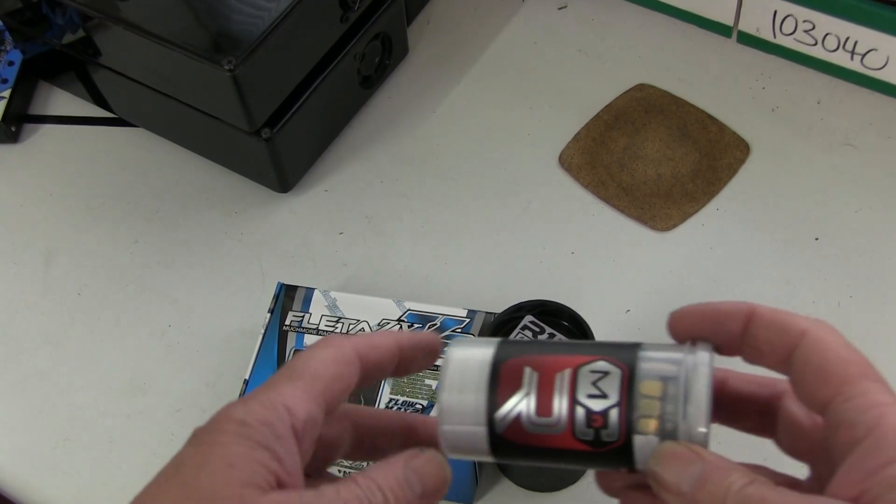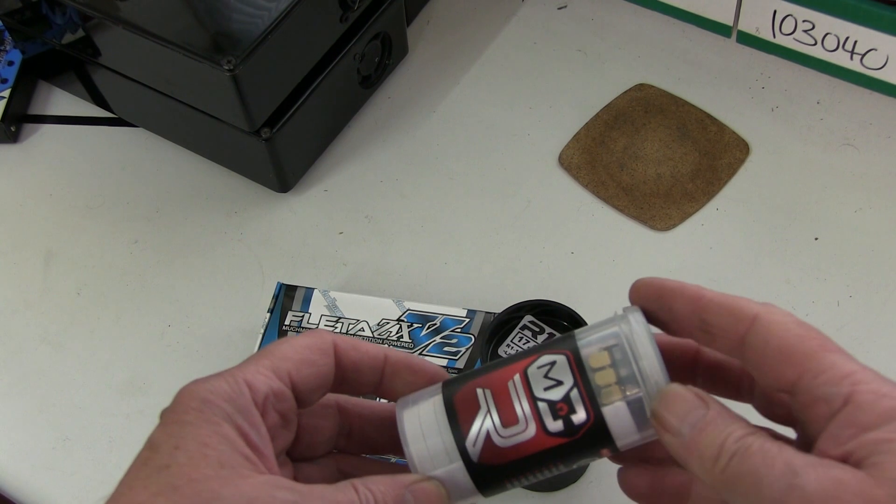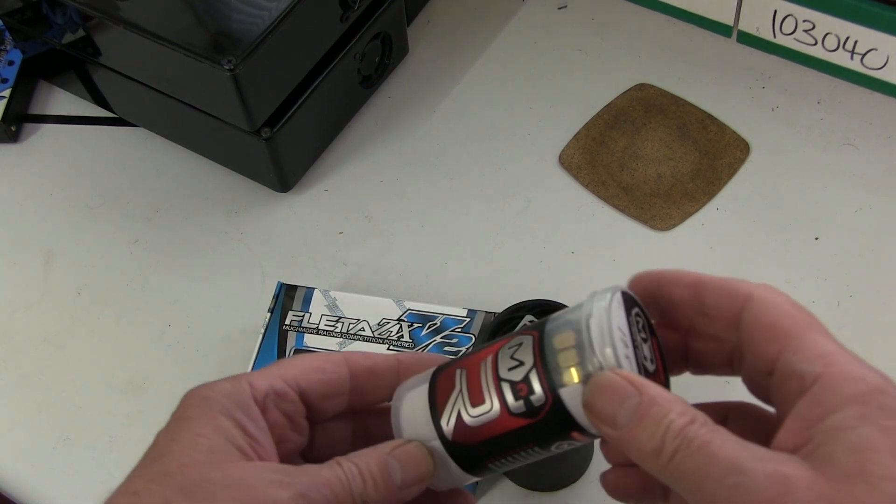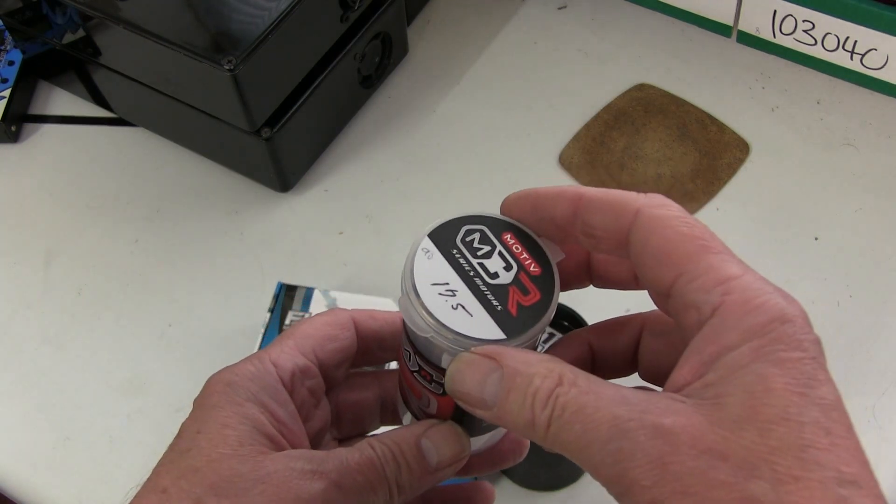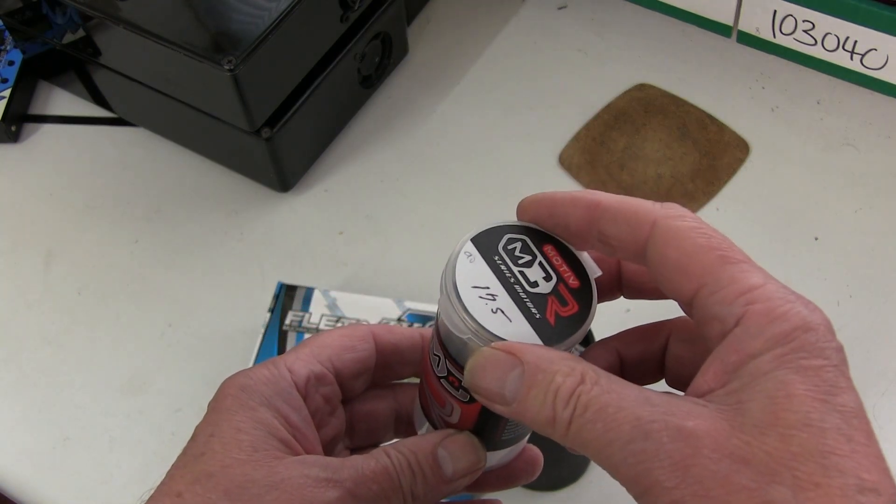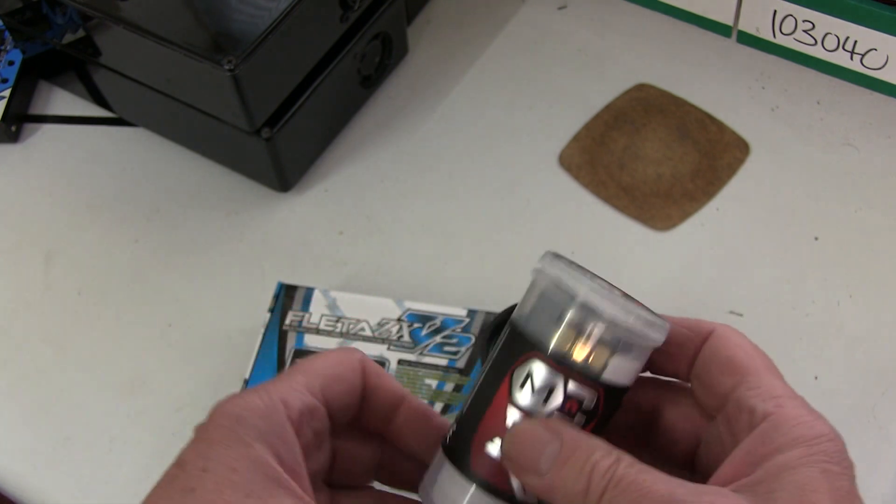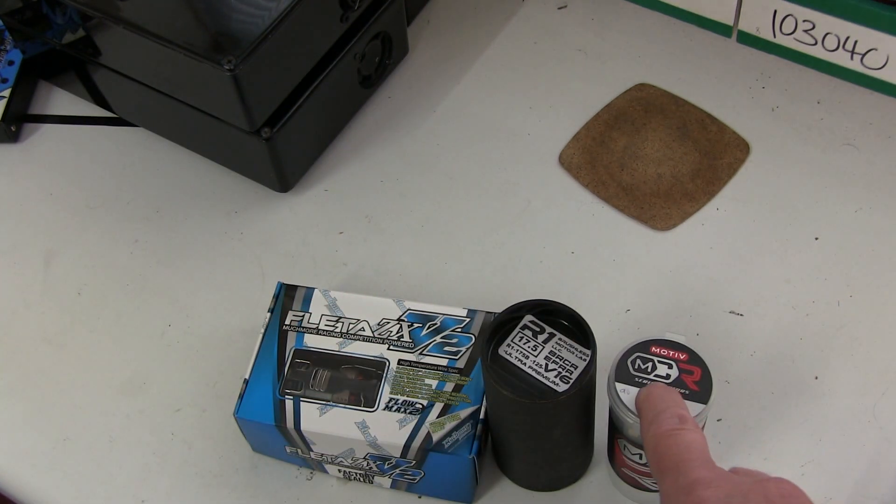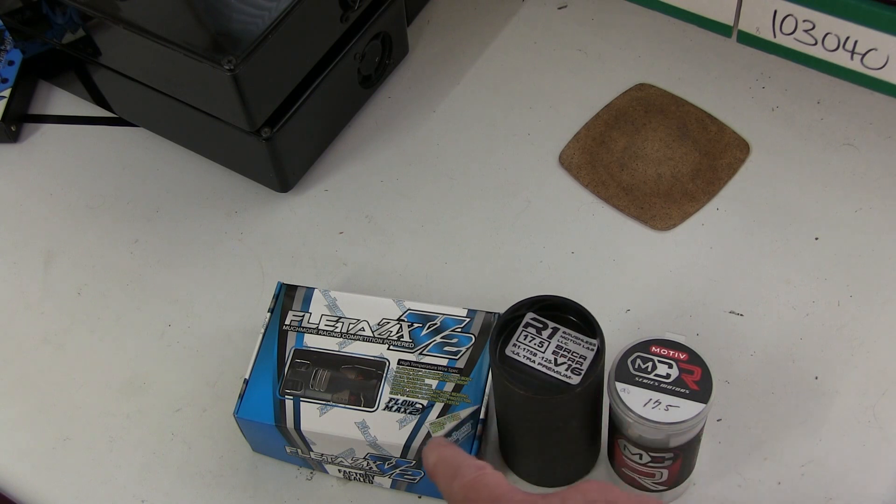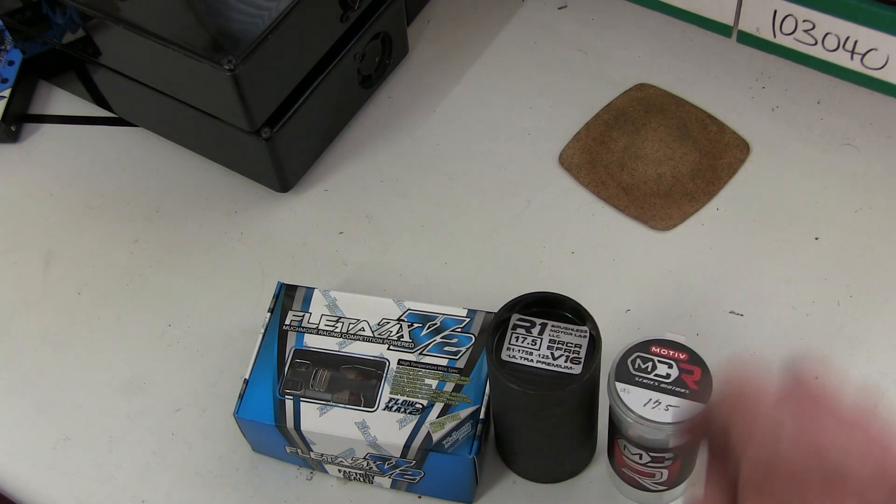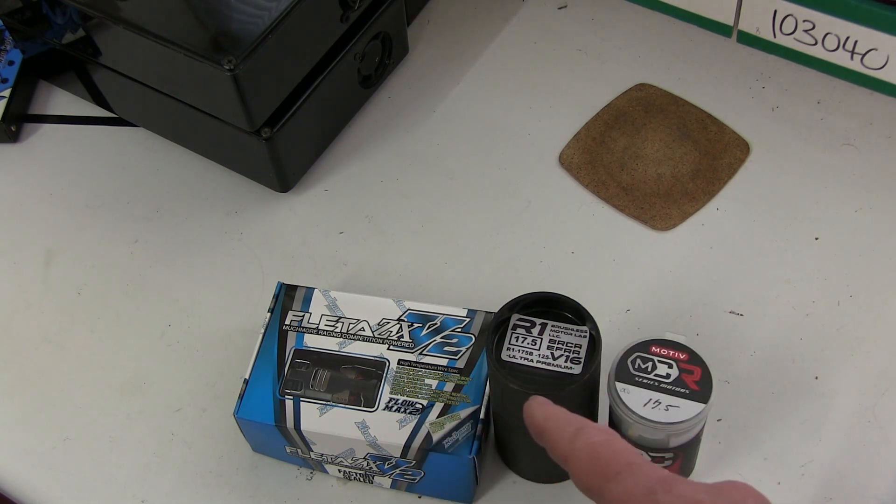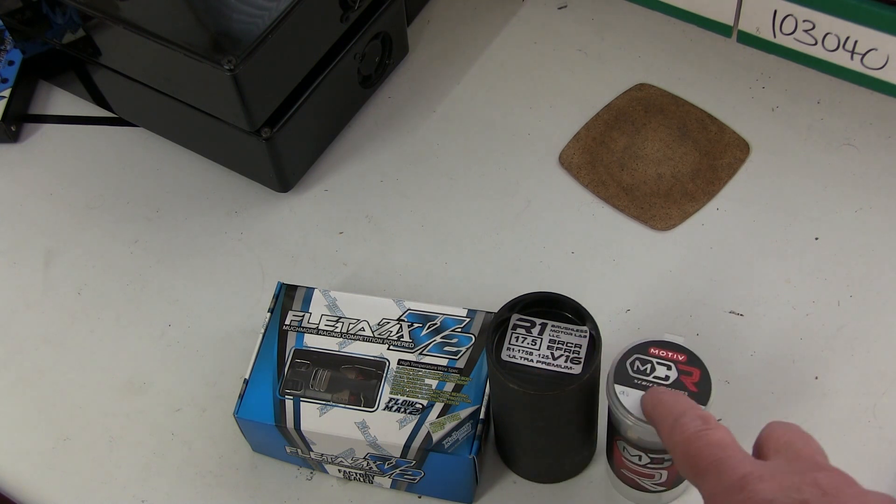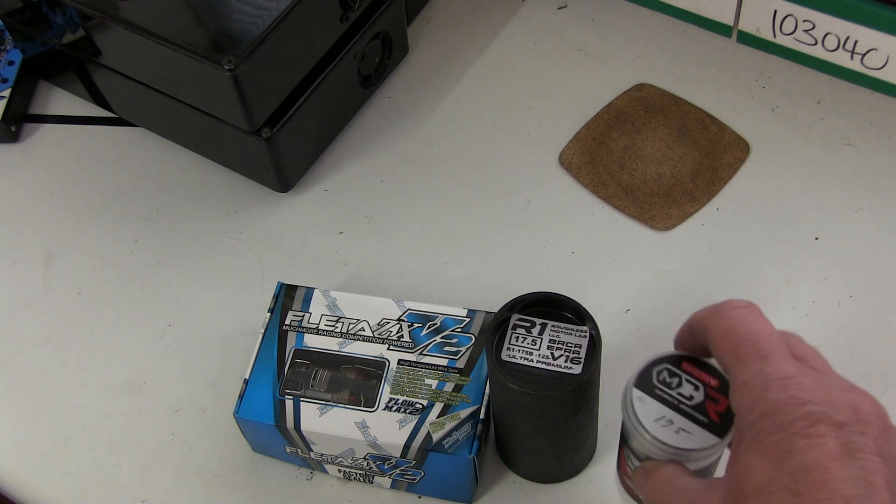A look at the latest motor for 2017 from Motiv, called the MCR, and this is a 17.5 turn one, the MOV101752S. I'm going to compare it to the R1 and the Fleta ZXV2, the R1 V16, which we've looked at before. They're the latest and quickest motors around, and I've done the test on these before. I'll just have a look at this, and then we can compare all the results.